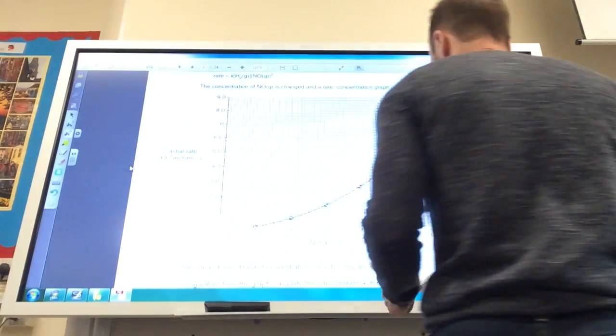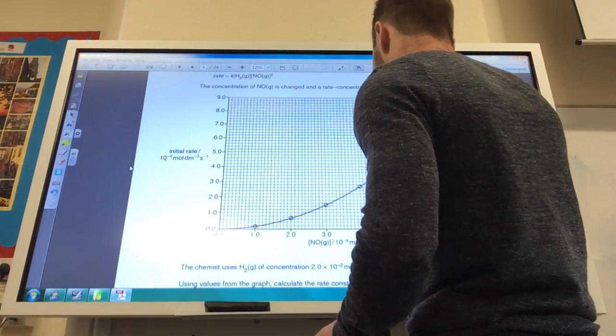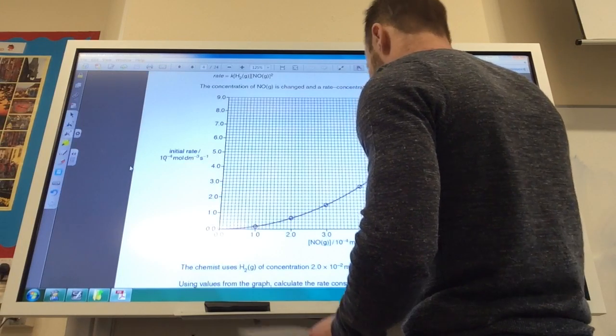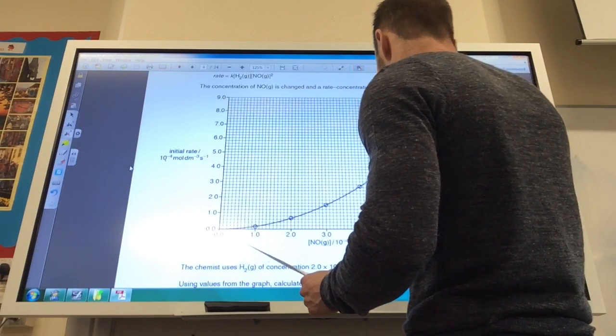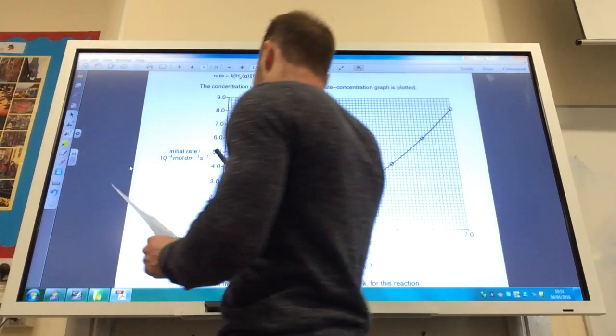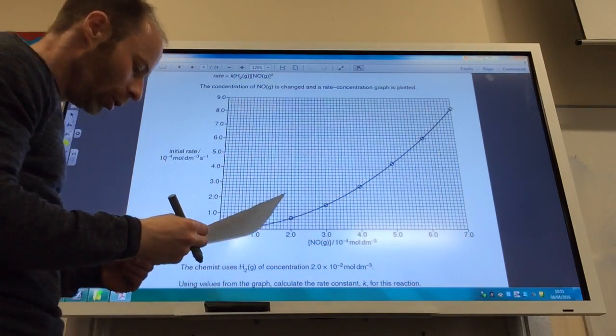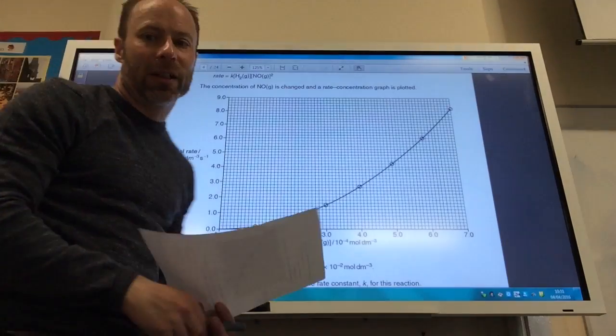So to make things easy, I'm going to choose this one. So this concentration of nitrogen monoxide here, which is 5 times 10 to the minus 4, and that gives me a rate here of 4.2 times 10 to the minus 4.